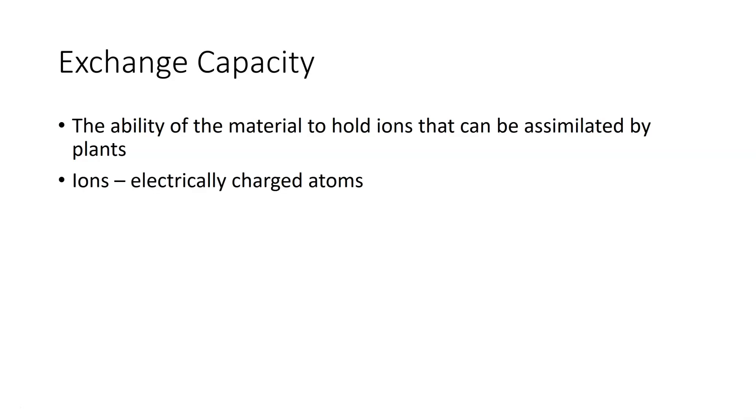Ions by definition are electrically charged atoms. These are atoms that have gained or lost electrons. A cation has a net positive charge and anion has a net negative charge. The capacity goes down to how much cations, how much anion can the soil hold and be able to exchange that.